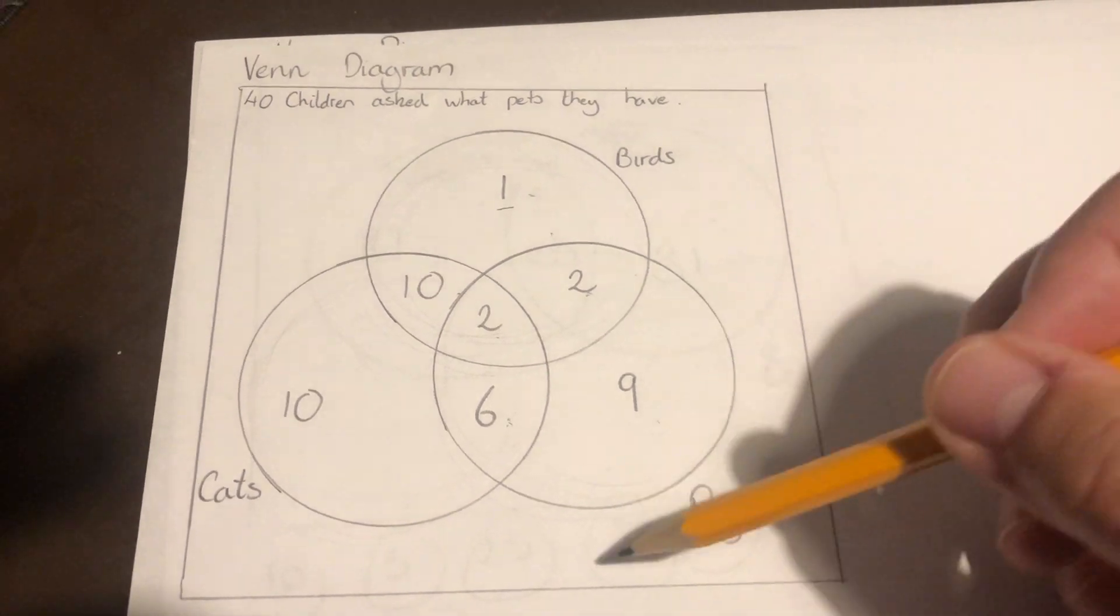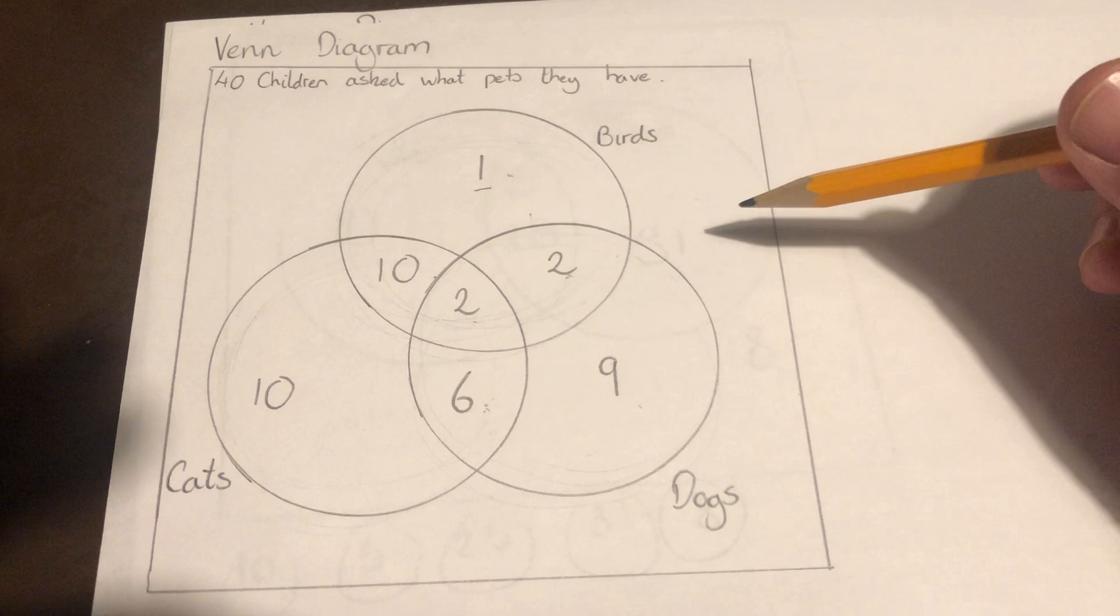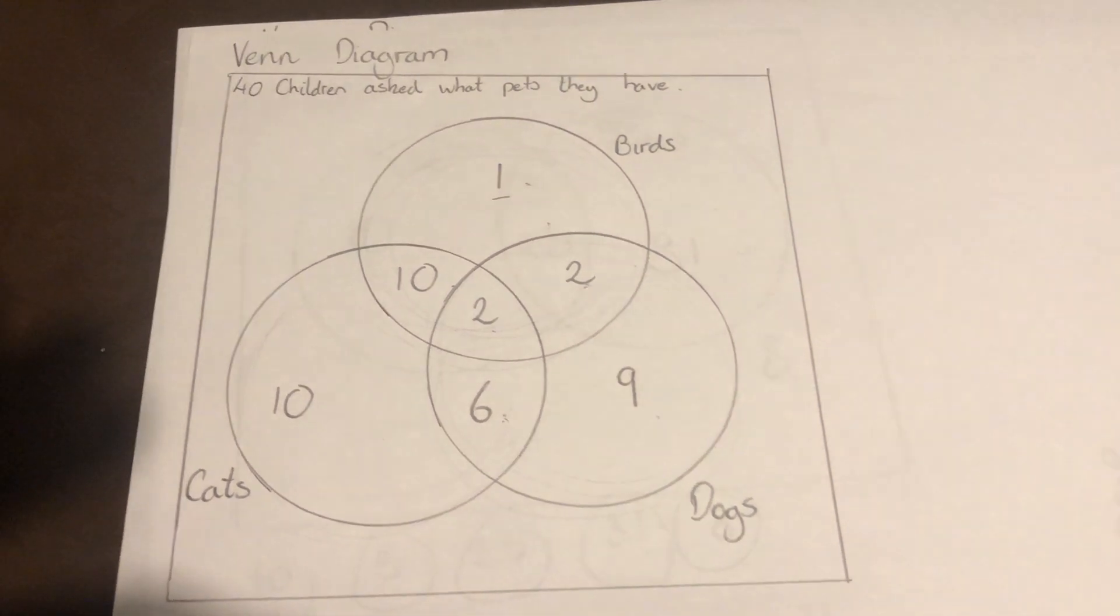And again, like the other one, if we saw something outside, if we had a number outside the circles, that would mean they have no pets. So hopefully that will help.